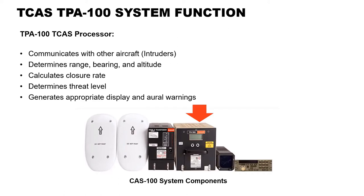The TCAS system monitors the airspace surrounding your aircraft by interrogating the transponder of intruding aircraft. The interrogation reply enables TCAS-2 to compute the range between your aircraft and the intruder, relative bearing to the intruder, altitude and vertical speed of the intruder if the intruder is reporting altitude, and closing rate between the intruder and your aircraft. Using this data, TCAS predicts the time to and the separation at the intruder's closest point of approach, also known as CPA.